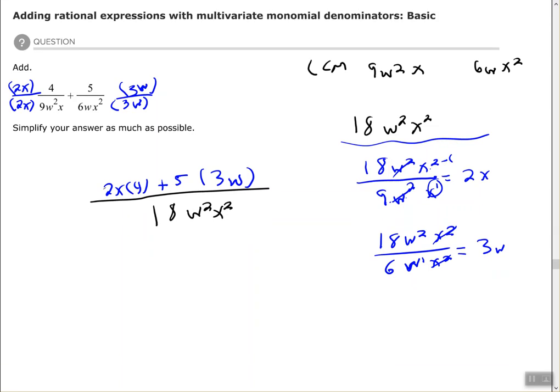Now we need to simplify. We have (8x + 15w)/(18w²x²). Make sure you look at all three of those numbers to see if they have a common factor. 8, 15, and 18 don't have a common factor, so we cannot factor anything out. We cannot simplify this anymore. This is our final answer.